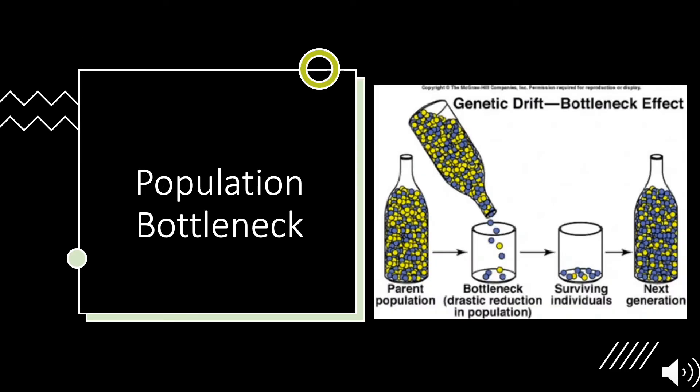Let's look at the first type of genetic drift: population bottleneck. Essentially what happens here is we have a population that we'll call the parent population, as represented by the bottle of yellow and blue beads. What happens is a bottlenecking event that reduces the population drastically.